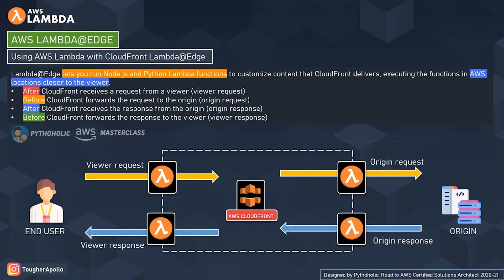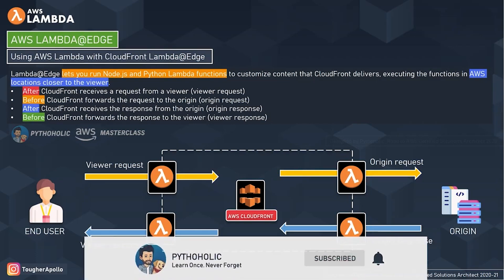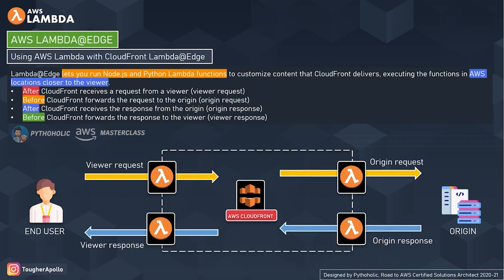The viewer response function also doesn't execute when CloudFront automatically redirects an HTTP request to HTTPS — when the viewer protocol policy is redirected from HTTP to HTTPS. You can use the same Lambda function with multiple CloudFront distributions. CloudFront does wait for an event to complete before making another trigger. You can also have all four event associations tied to a single function.